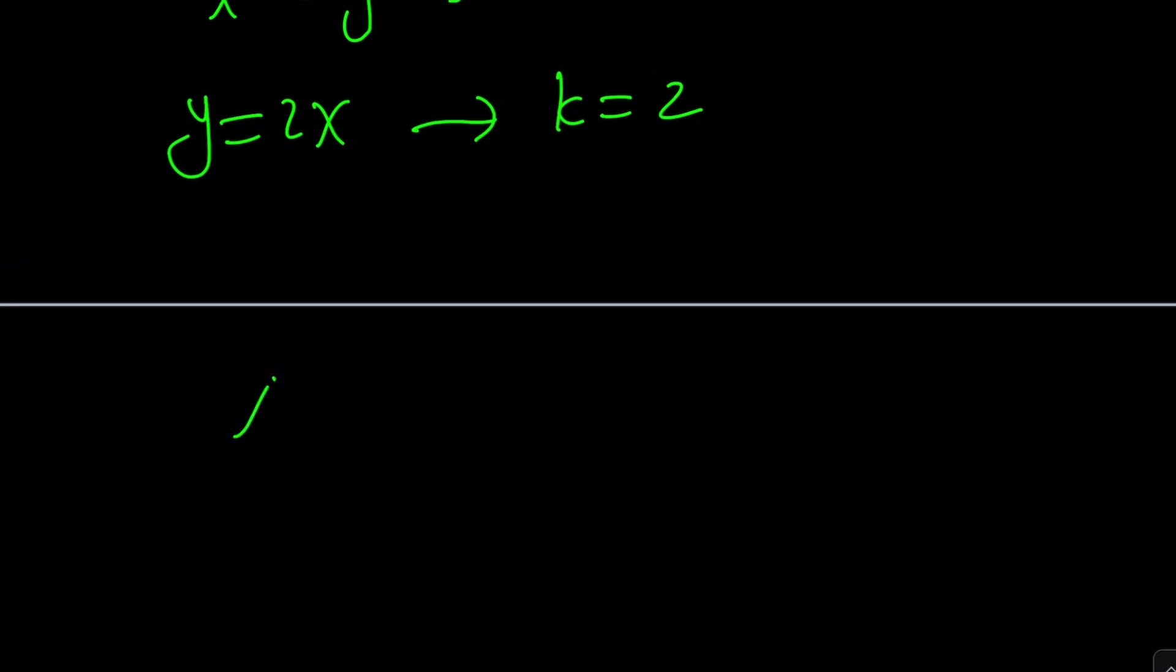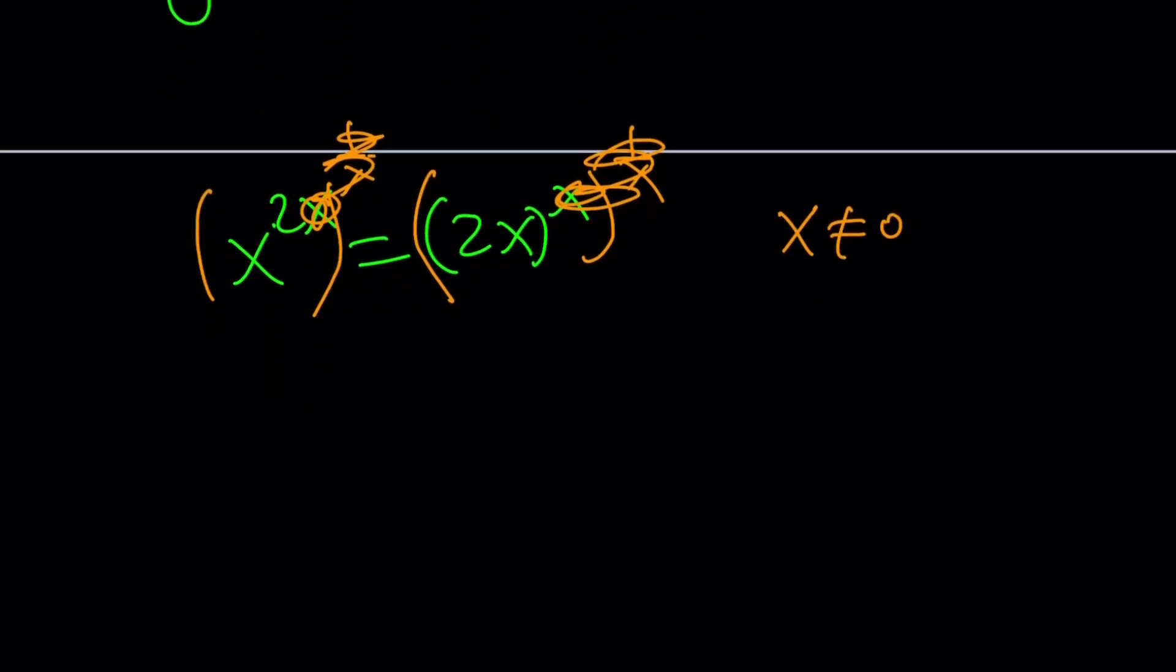So we have x to the 2x equals 2x to the x. Let's raise both sides to the power 1 over x to get rid of the extra x. So these are going to cancel out. These are going to cancel out. Remember, x does not equal zero. And from here, we get x squared equals 2x. Awesome.